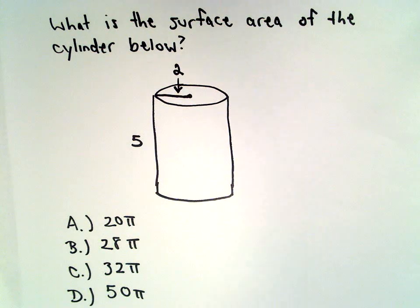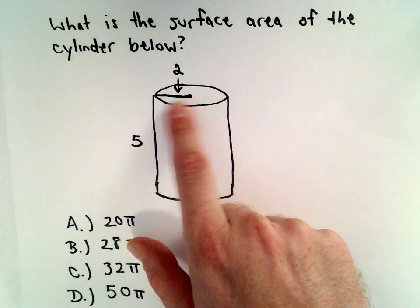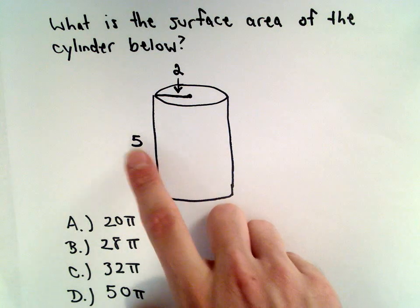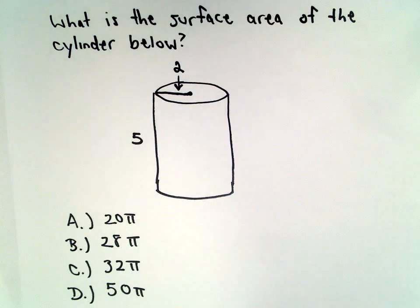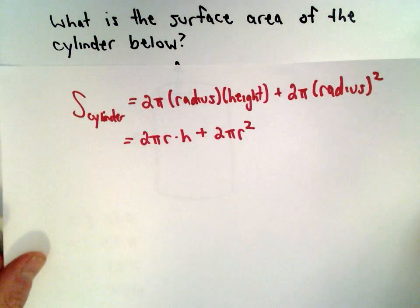In this case, we want to find the surface area of the cylinder. The cylinder has a radius of 2 and a height of 5. You'll be given this formula on your formula sheet, but I went ahead and wrote it down.